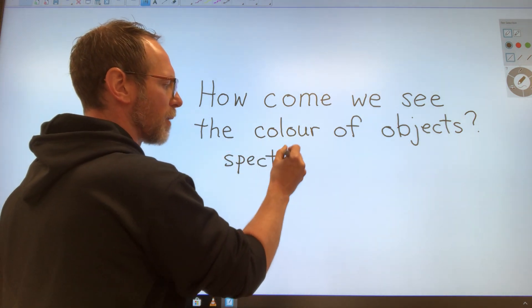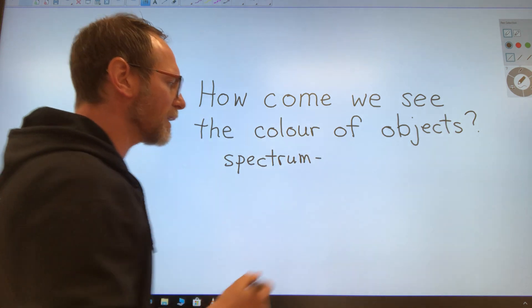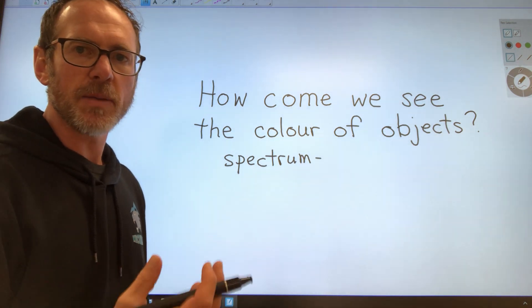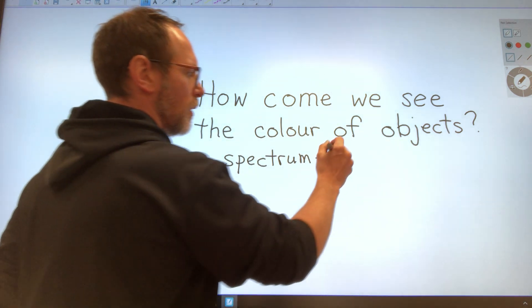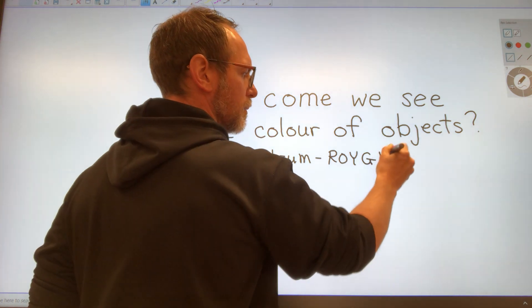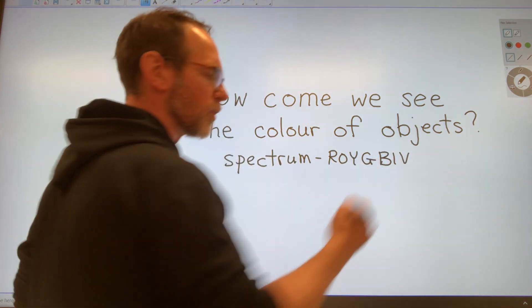Now remember from our last video that white light, even though it looks like it's white, it's actually made up of all the different colors of the rainbow. Red, orange, yellow, green, blue, indigo, violet, right? Roy G. Biv.